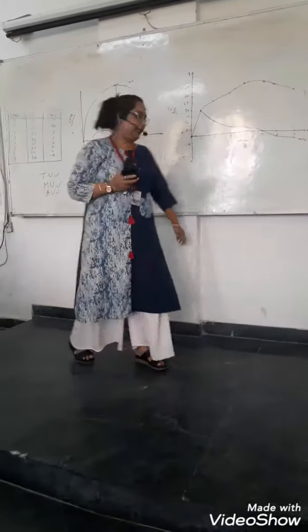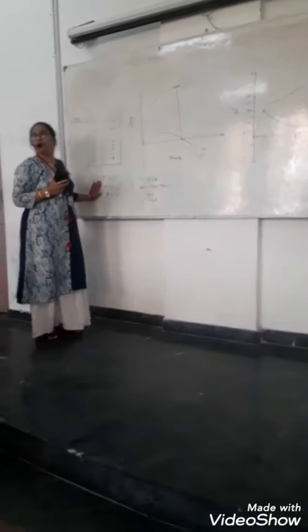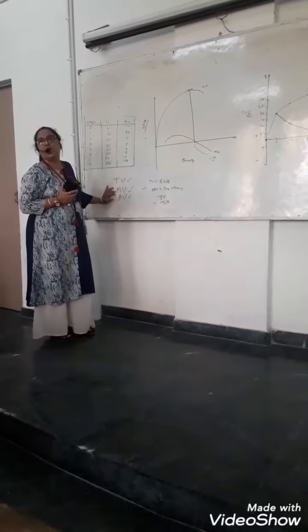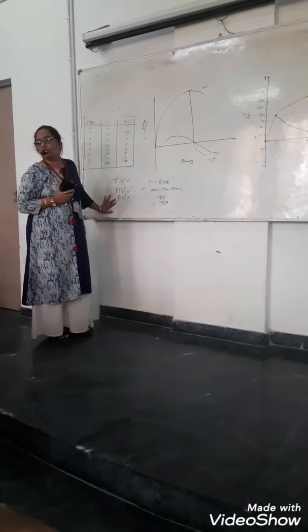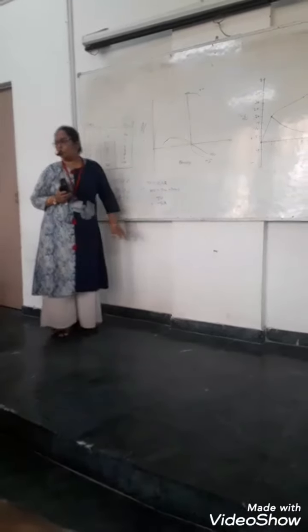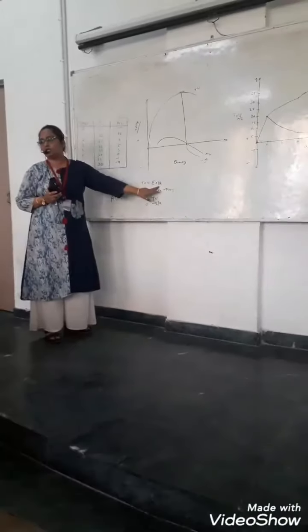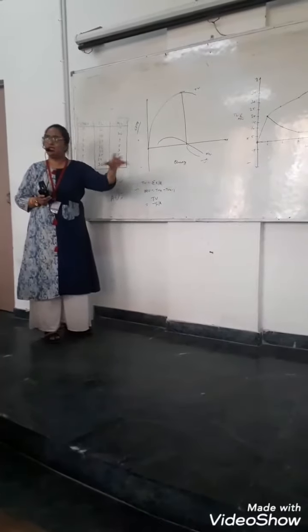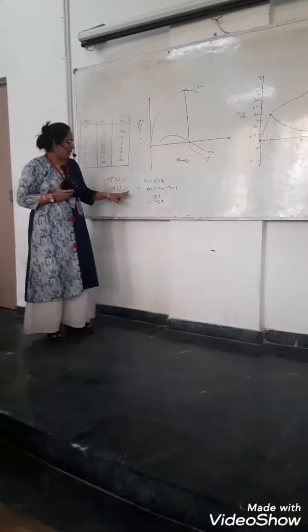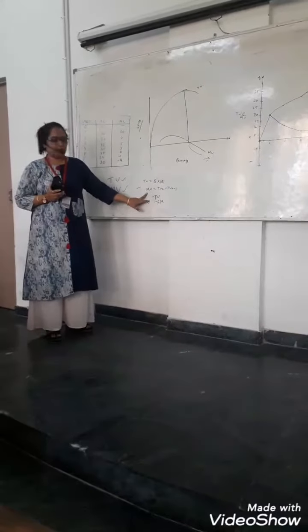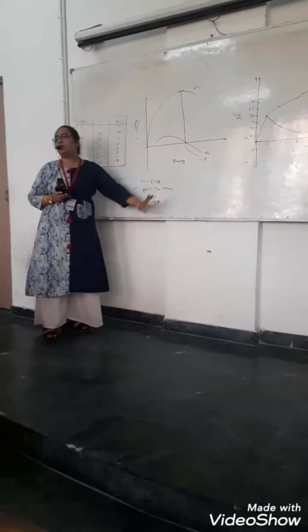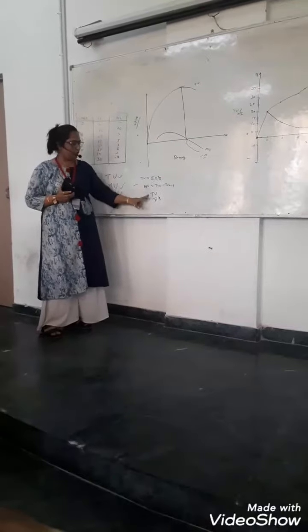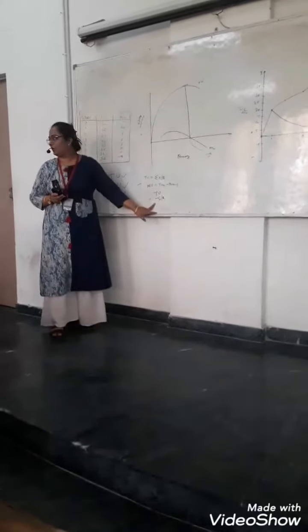There are basically three types of utility. One is total utility, denoted as TU. Second is marginal utility, denoted as MU. And third is average utility, denoted as AU. To calculate TU — total utility — it is the sum of total quantity, written as sigma X or Q. The formula of AU is total utility divided by quantity, TU over Q or X.